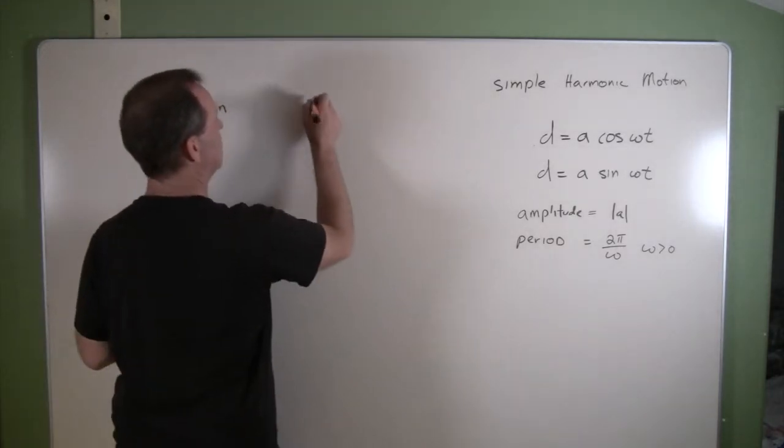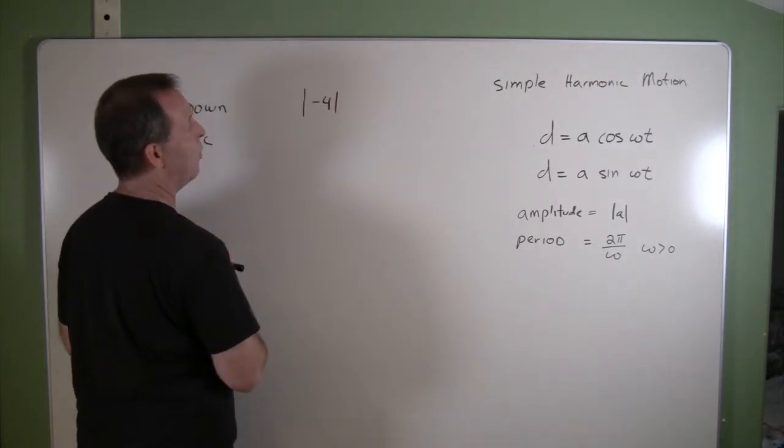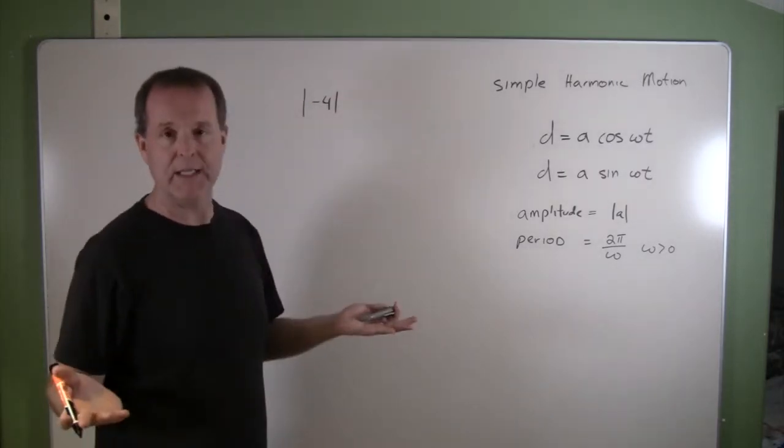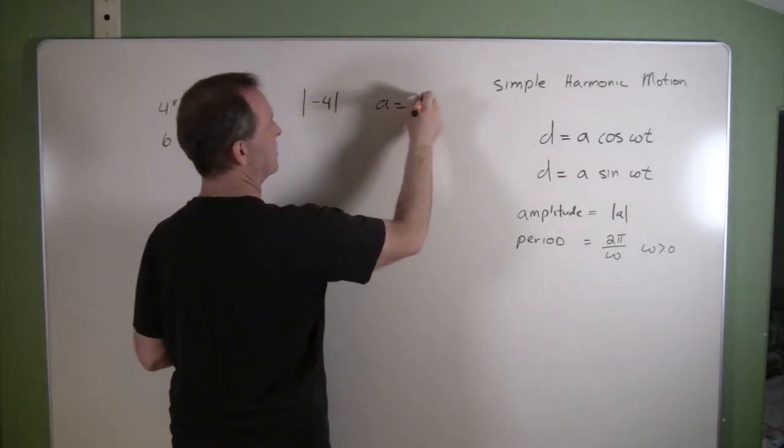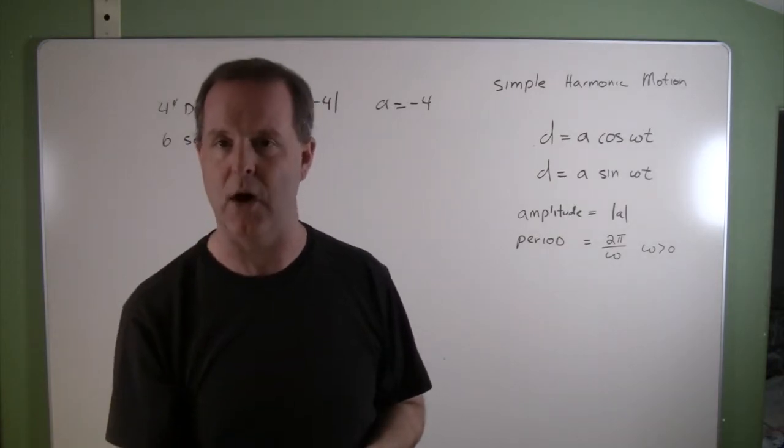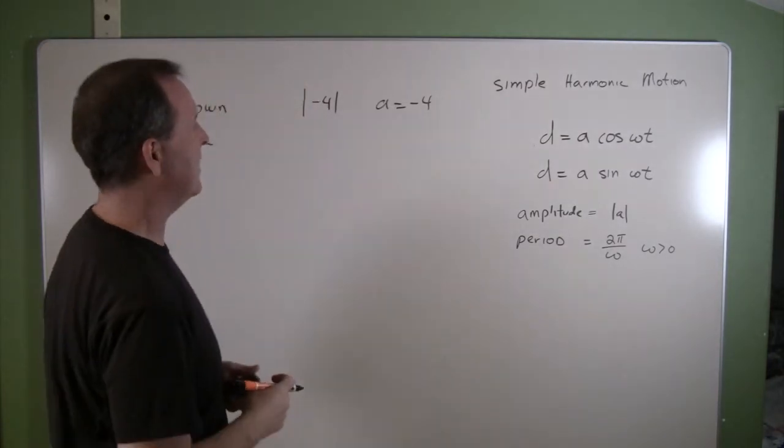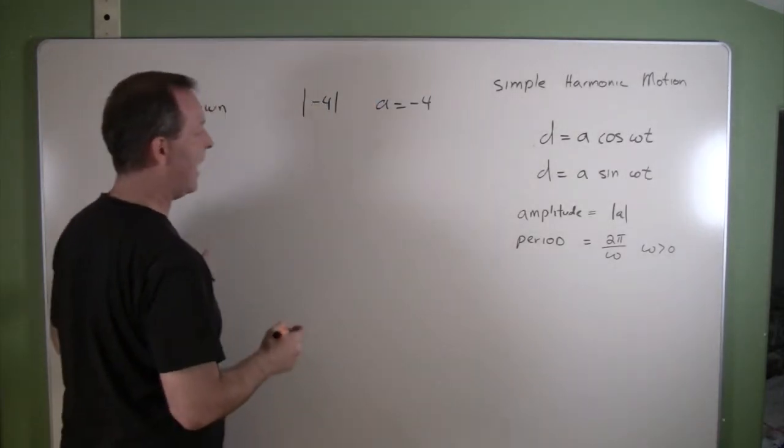So I have an amplitude of minus four. Its displacement is four. So my model, I'm going to say a equals negative four. And I'm going to leave the negative there because I want you to know that I'm pulling it down or it's going in the negative direction to begin with. To find its period, I know that it takes